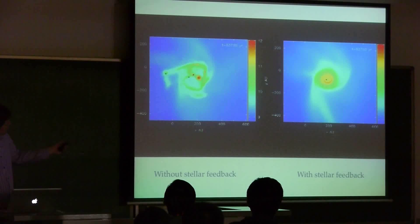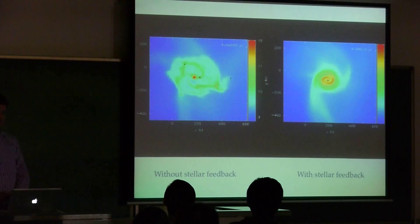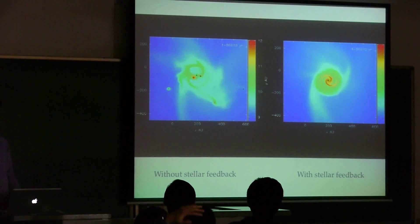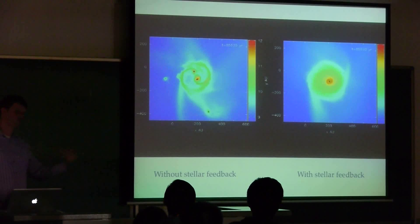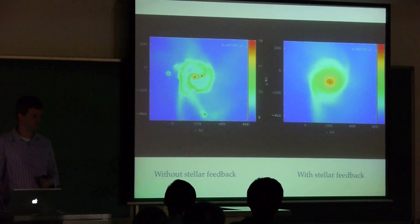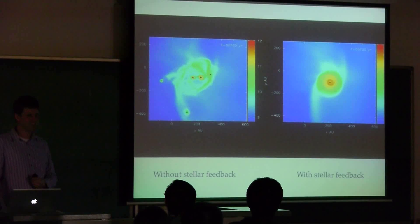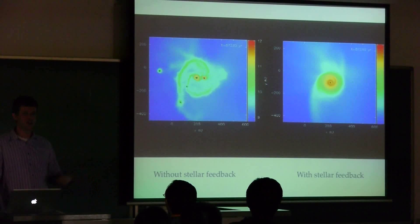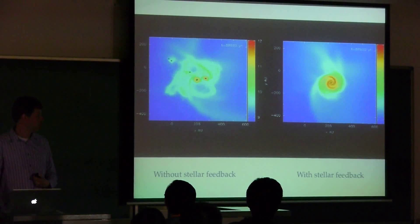So by looking at the numbers under different circumstances, we can study planet formation and we can compare with observations of star formation regions and observations of exoplanets. And that's how we slowly get some idea about how planets work.